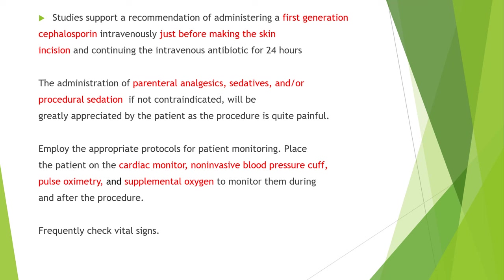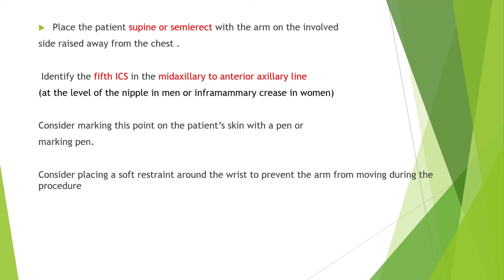Place the patient on cardiac monitoring, non-invasive blood pressure monitoring, and pulse oximetry with supplemental oxygen during and after the procedure. Continually check vital signs. Place the patient supine or semi-erect with the arm on the involved side raised away from the chest. Identify the fifth intercostal space in the mid-axillary to anterior axillary line. Consider marking this point on the patient's skin with a pen and consider placing a soft restraint around the wrist to prevent arm movement during the procedure.